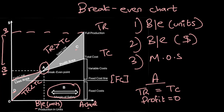If they ask you to locate the profit on this graph, profit will be at the actual level of output. This is your total revenue and this is your total cost, so the difference between total revenue and total cost at the actual output is your current profit.